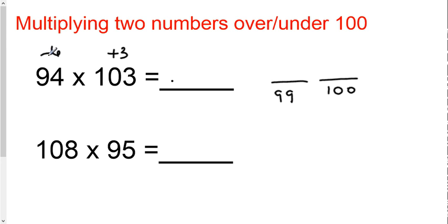So what you're going to do: it's under by 6, over by 3. Negative 6 times 3 is 18. You're going to subtract 18 from 100. 100 minus 18 is 82. You're going to write an 82 there.